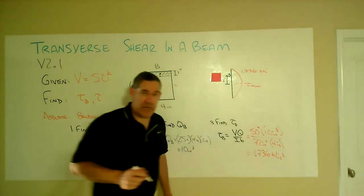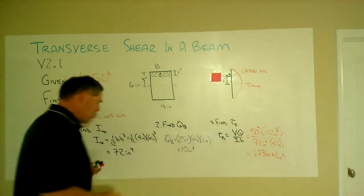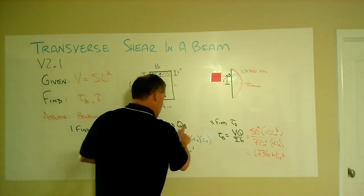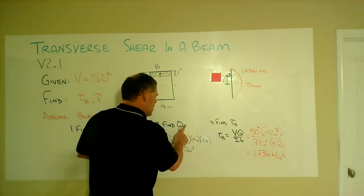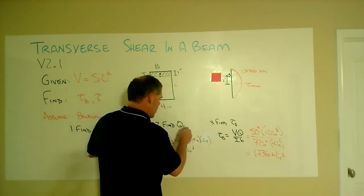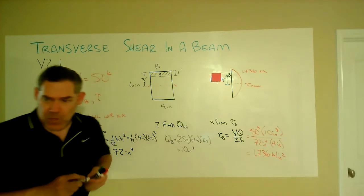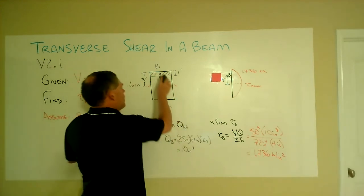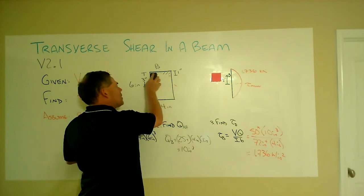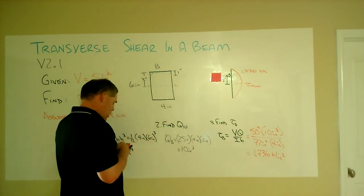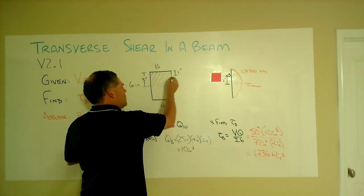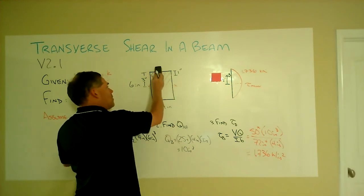We haven't calculated the tau_max yet, so let's go do that. All right, so let's go back. The I hasn't changed. What is going to change is the first moment of the associated area. So at the neutral axis, we're no longer talking about that location. We're now talking about all of this area outside of the neutral axis.